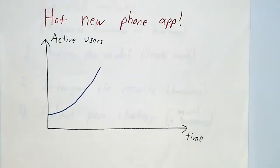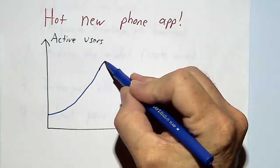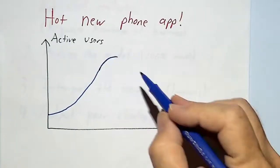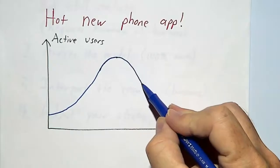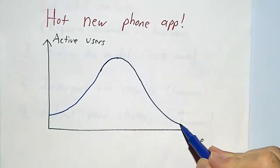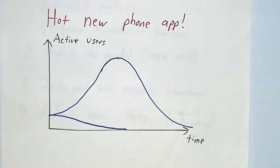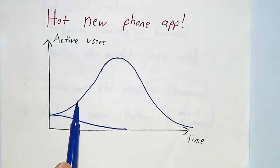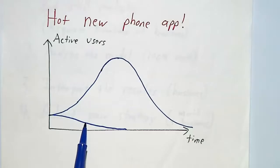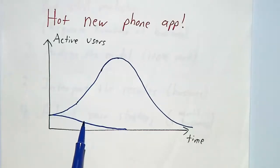Of course, at some point you're going to run out of people using your app, and eventually they're going to get tired of using it. But you're going to have a curve that looks something like that — if you're lucky. If you're not lucky, you're going to have a curve that looks something like that; it just fizzles from the start. So how can you get it to look like that and not look like that?